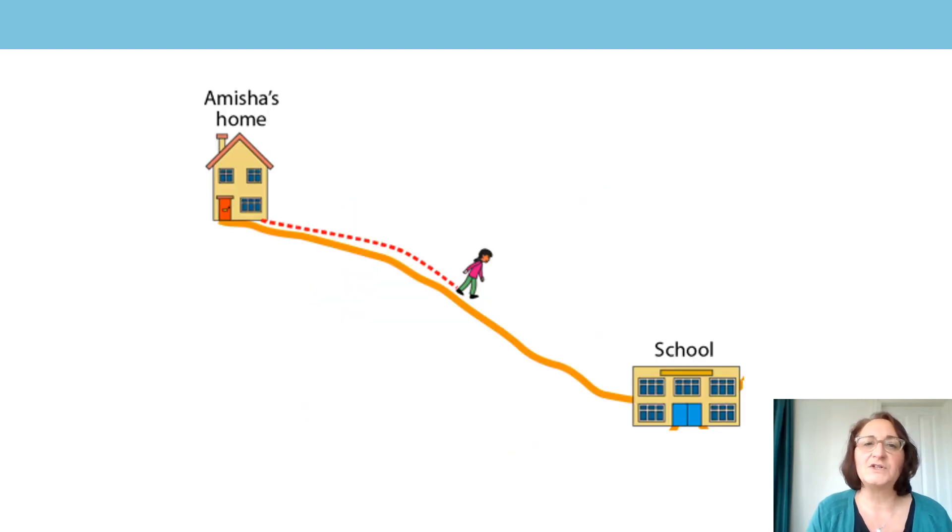Here we have Amisha's journey from her house to school. What could we say about Amisha? Yes, Amisha is about halfway through her journey to school so she has travelled 50% of the way. If you have a look at her home and then have a look at school and have a look at where the arrow is, it's about halfway, about 50% of the journey.